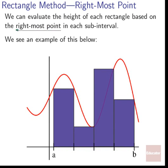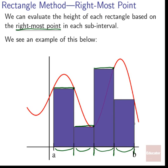Basically the same idea but flipped — we can look at the rightmost point. For each subinterval, we ask what height does the rightmost horizontal location get mapped to. For our first subinterval, the rightmost location maps to a certain height, determining our first rectangle's height. We repeat this for all four subintervals, using the rightmost horizontal location to determine each rectangle's height.